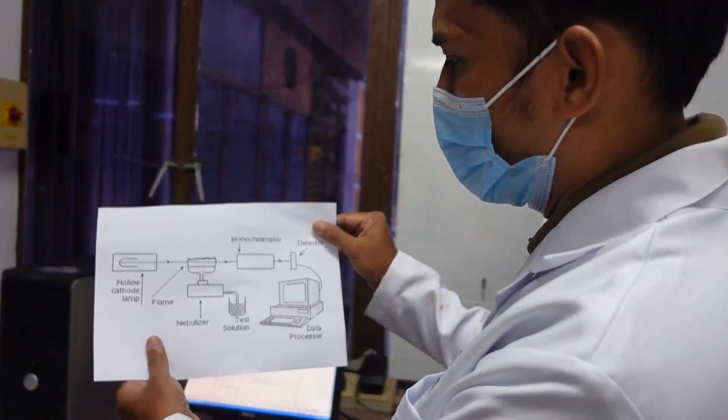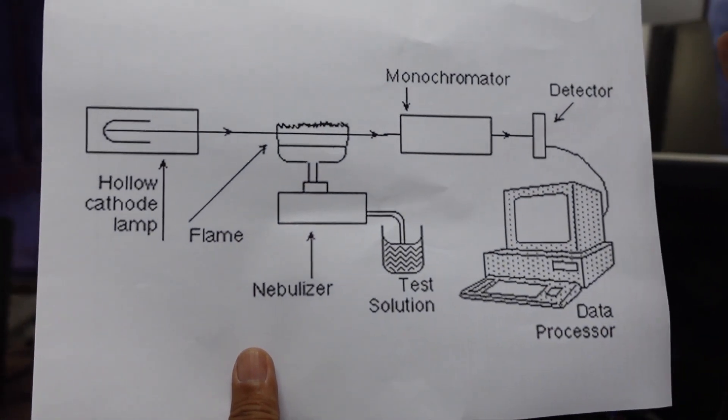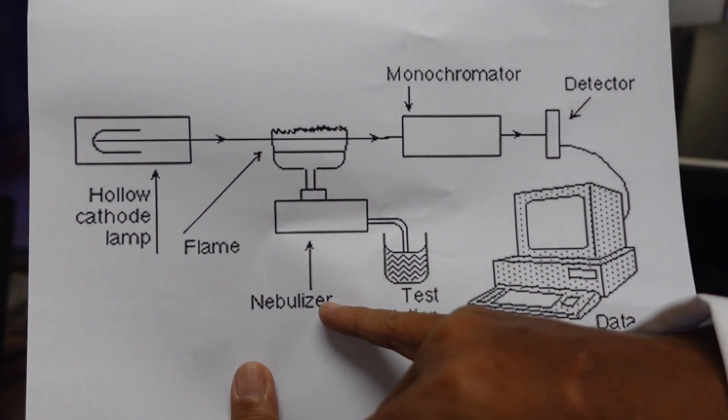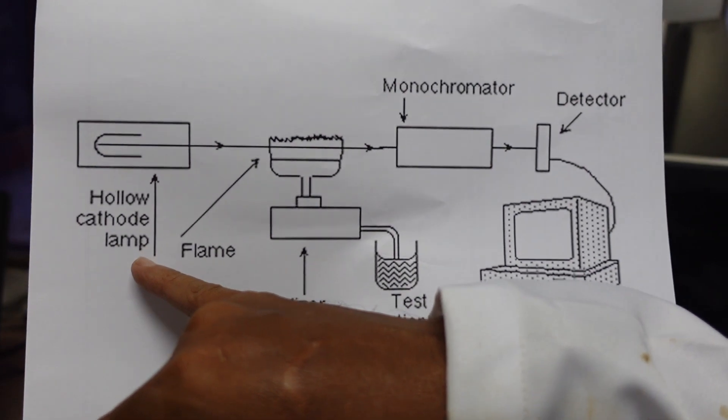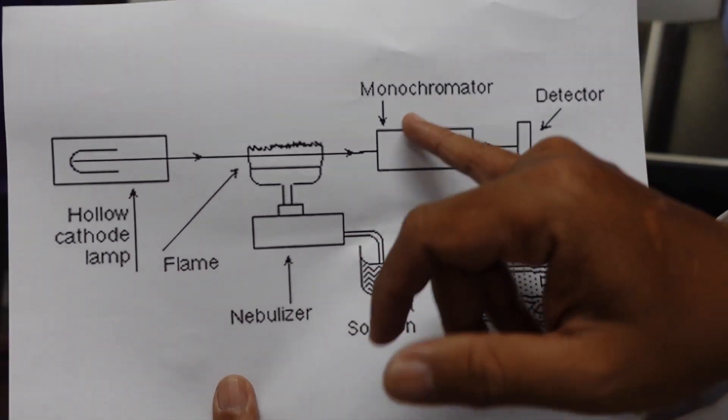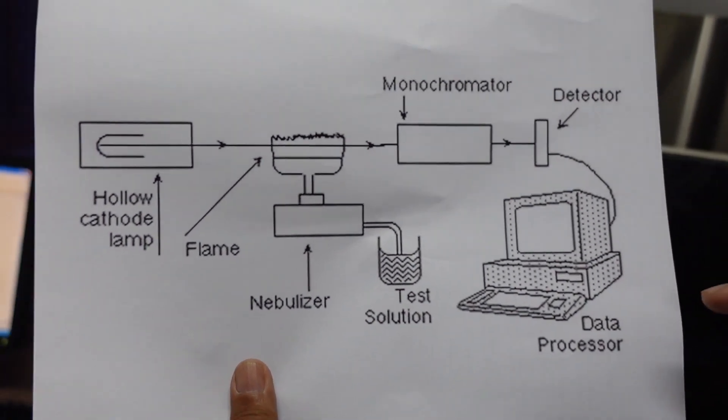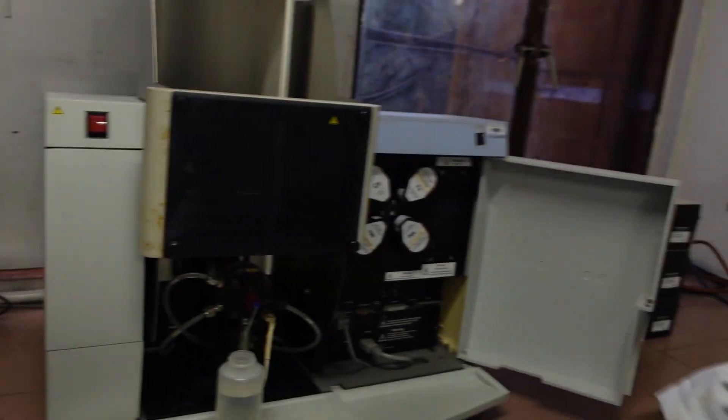Let me show you the diagram. This is a simple diagram of AAS. Basically, there are a few components involved. The main one is the nebulizer. There will be HCL, hollow cathode lamp. And also the monochromator and detector. And you're going to see the data processor in the form of PC.